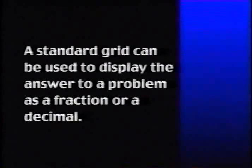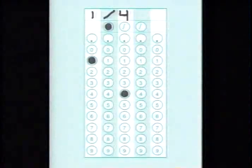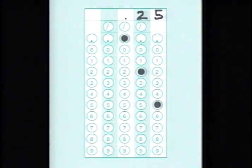As we mentioned earlier, a standard grid can be used to display the answer to a problem as a fraction or a decimal. For example, if the answer to a problem is a fraction, such as one-quarter, you can also enter it into the grid as its decimal equivalent of .25. Either answer will be scored as correct.